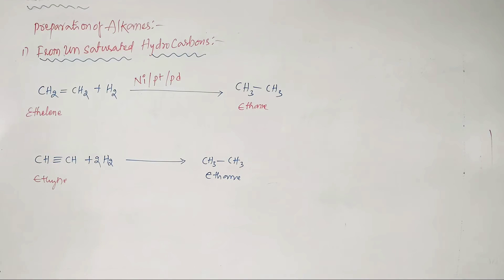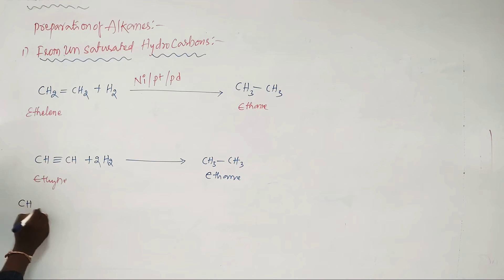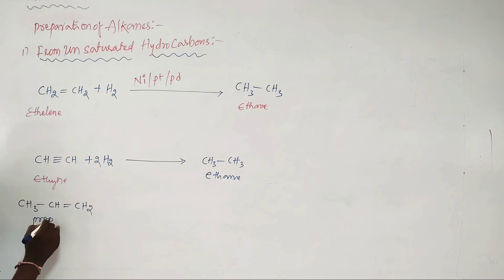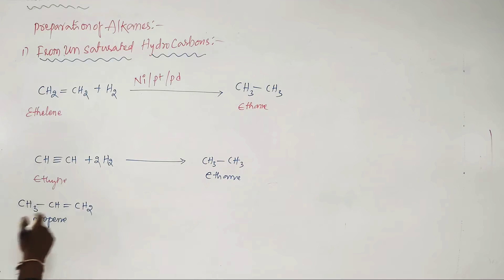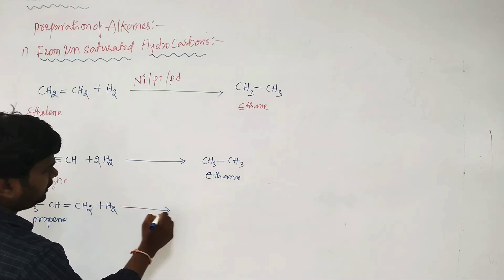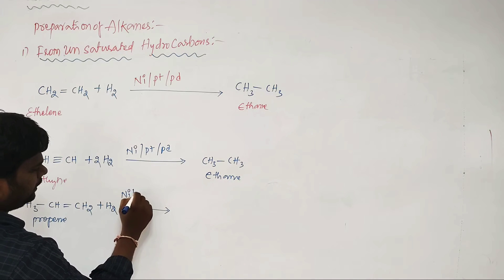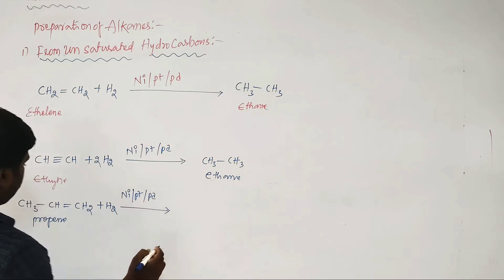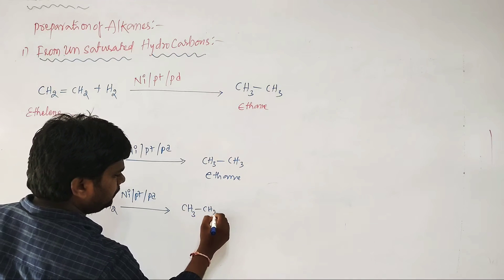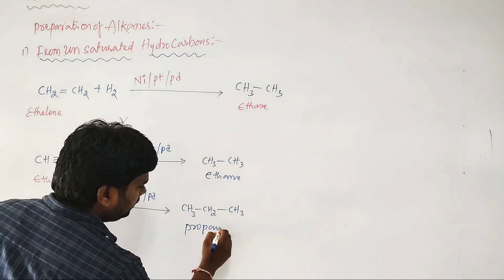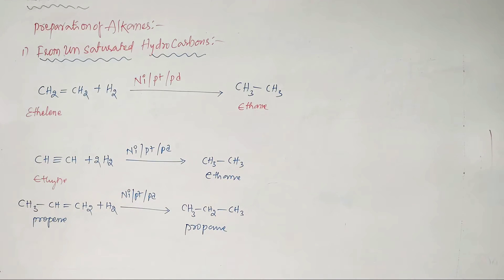This reaction is the reduction of unsaturated hydrocarbons, or hydrogenation of unsaturated hydrocarbons, giving alkanes as the products. For instance, propene can be converted to propane by hydrogenation or reduction in the presence of nickel, platinum, or palladium, giving CH3–CH2–CH3 (propane) as the product. This is the first preparation method of alkanes from unsaturated hydrocarbons.